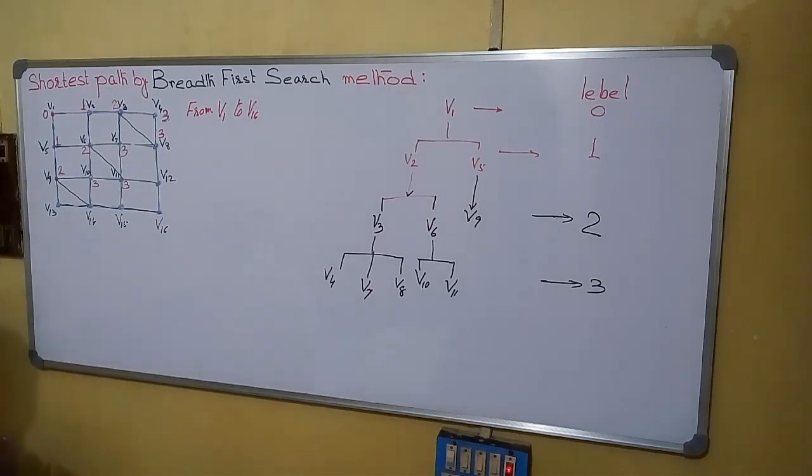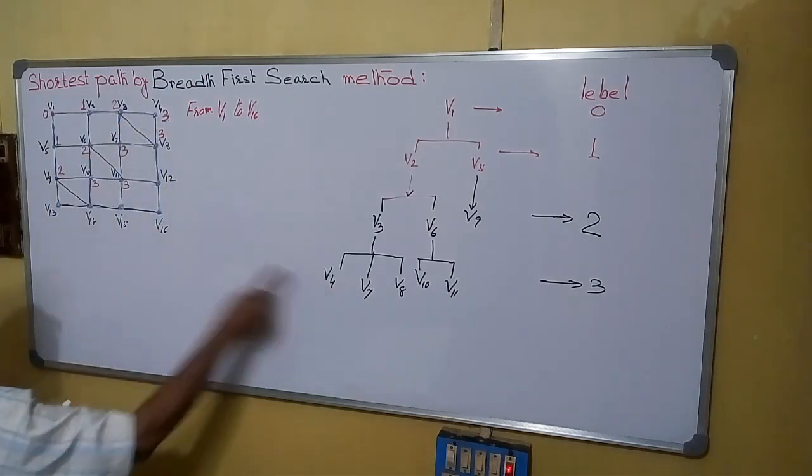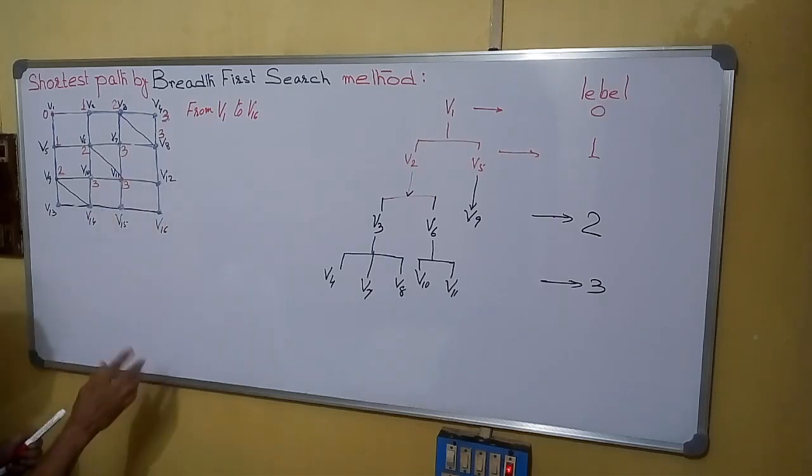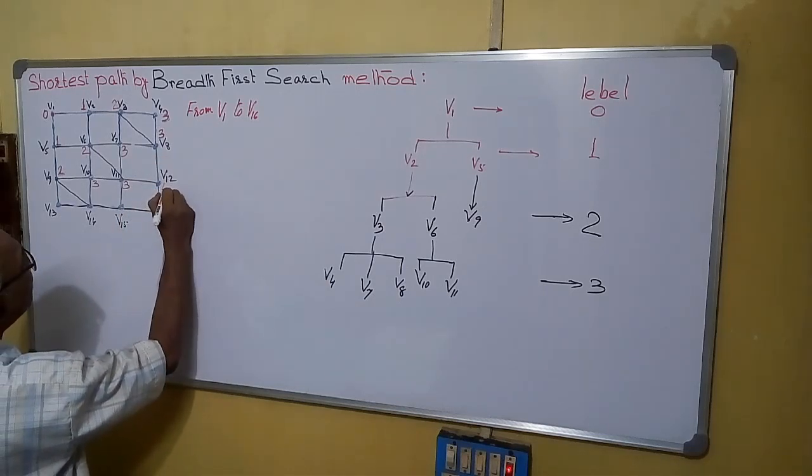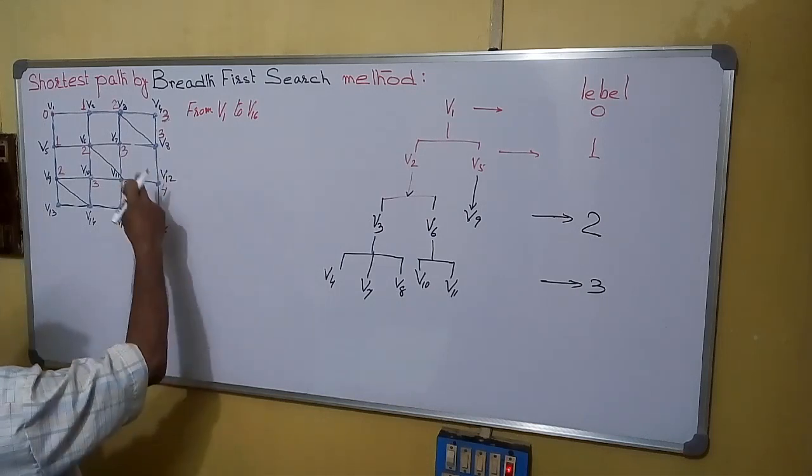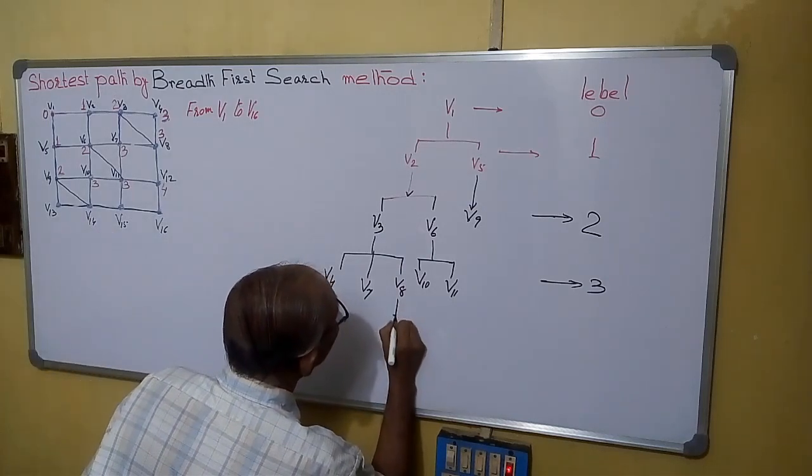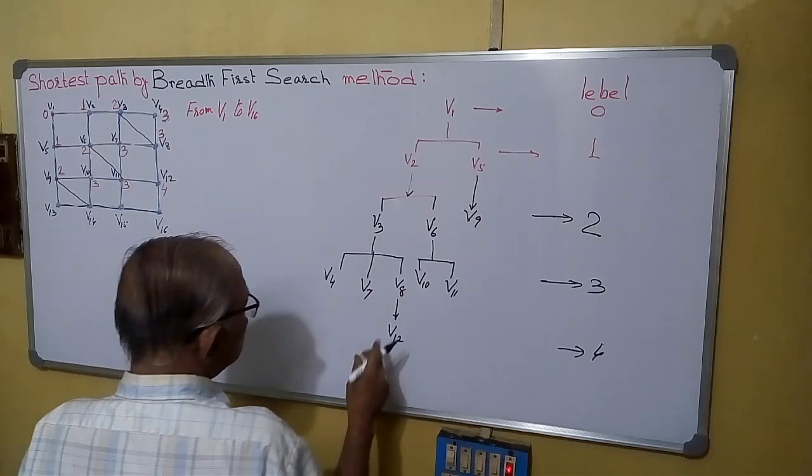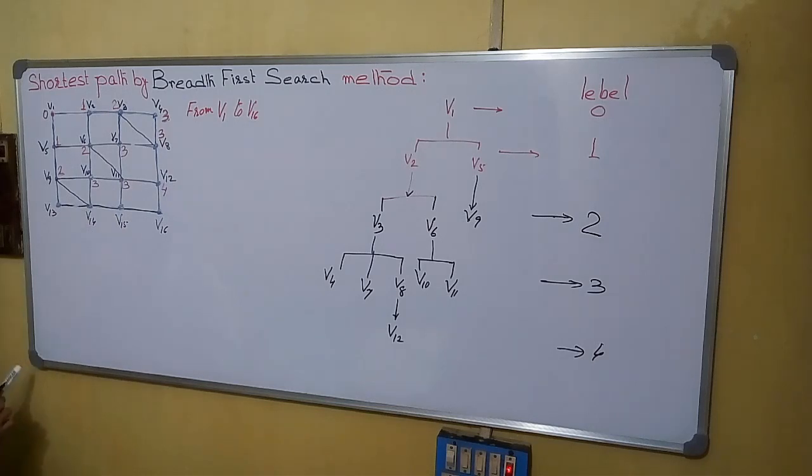Now from V4 you can start. V4 is here. Adjacent vertices are already leveled. V7. See all the adjacent vertices are already leveled. Go to V8. Adjacent vertex is V12. So we will mark it 4. From V8 we are going to V12 because all others are marked. From here we are going to V12 and its level is 4. So now V10 is left. From V10 we can go to V11 is already done, V14. V14 is also marked as 4.